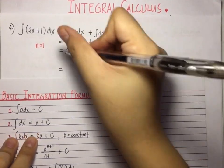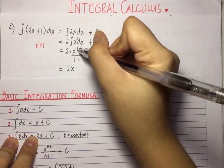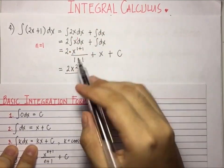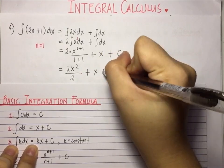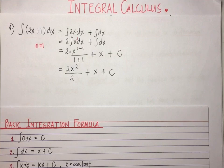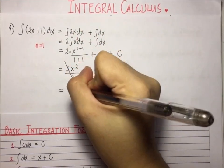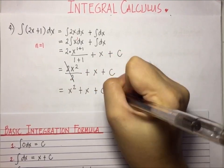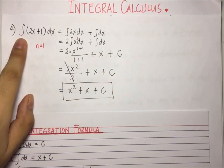Simplify: this is 2 times x raised to 2 divided by 2, plus x plus c. We can still simplify by dividing out 2. So we have x squared plus x plus c. And this is the integral of number 4.